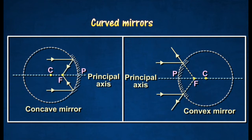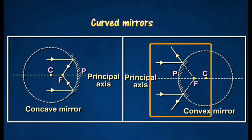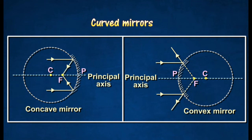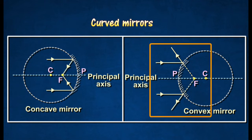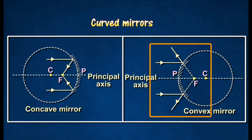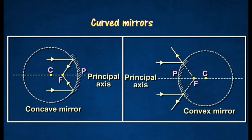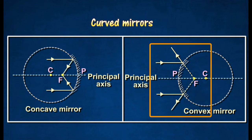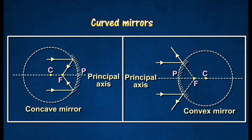Convex mirrors have reflecting surfaces on the outer curved side, as shown in the diagram. Light rays parallel and close to the principal axis diverge at a point F after reflecting from a convex mirror.